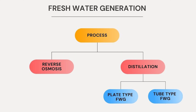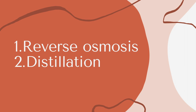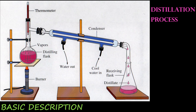There are two basic processes involved in producing fresh water: number one is reverse osmosis, and number two is distillation. On cargo ships, we use distillation for fresh water production.